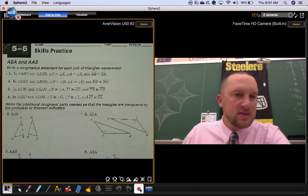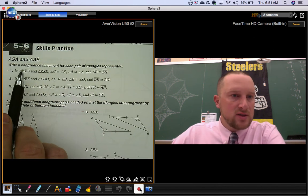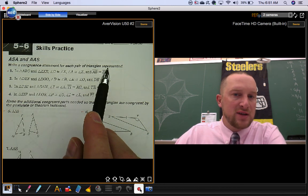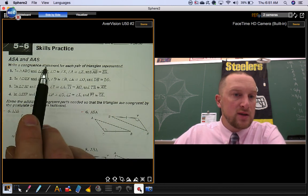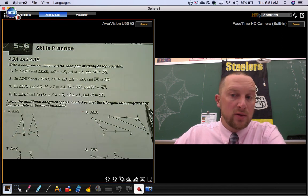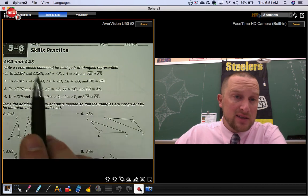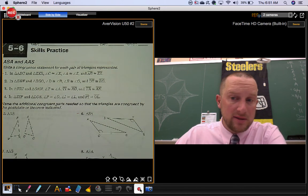Practice for section 5-6. In this first section, they want you to write a congruence statement for each pair of triangles represented. So if you're writing a congruence statement, that means these triangles are congruent. You don't really have to check to see if they are congruent. You're basically just lining up the corresponding parts. That's the exercise.